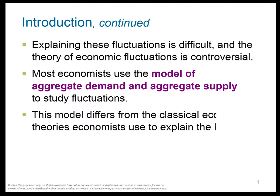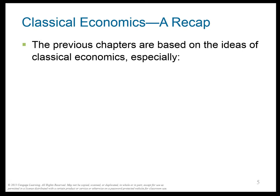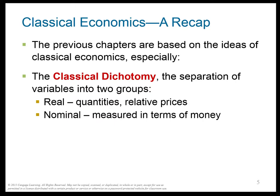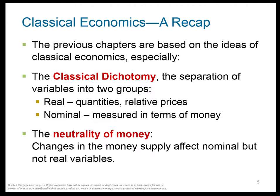This is different from classical economic theories, which are used to explain the long run. Classical economics depends on the classical dichotomy — the separation of variables into real variables, those measured in quantities, and nominal variables, those measured in terms of money. We really only care about real quantities. Changes in the money supply can affect nominal but not real variables. That's called the neutrality of money.